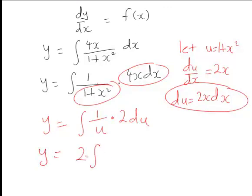y is equal to 2 times the integral of 1 over u du, which works out to be 2ln of the absolute value of u plus c.